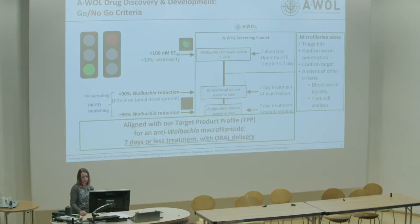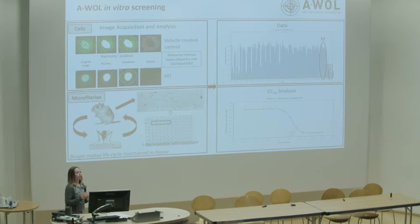Our cell-based screen uses a mosquito cell line containing mosquito Wolbachia, with an image-based operator system — we can screen thousands and thousands of compounds this way. This represents about three to four years of assay development from our original qPCR screen, and we're now in a much higher-throughput position.